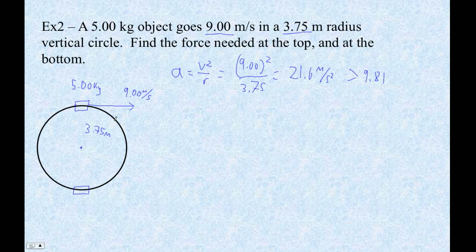And let's see. I think the other thing we need to do is figure out the force of gravity. So weight is m times g, so that's going to be 5 times 9.81, and that's 49.05 newtons of force.